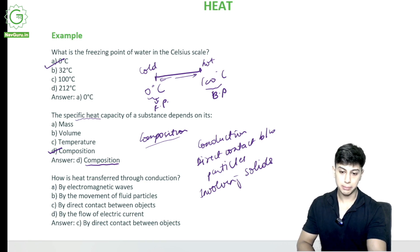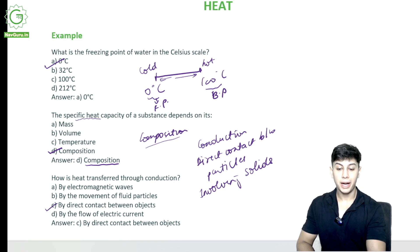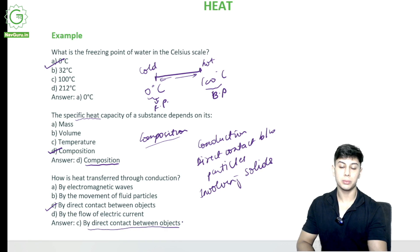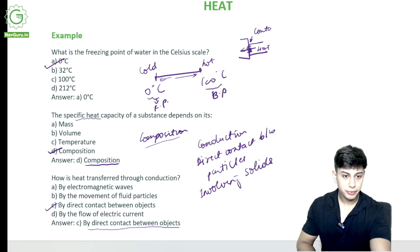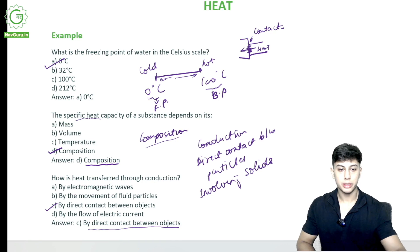How is heat transferred through conduction? It is by direct contact between the objects. For conduction to happen, both objects need to be in contact — if one object is hot and heat is flowing, this contact is required.